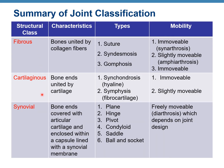Here's the summary of joint classification. Structurally we have fibrous, cartilaginous, and synovial — those are our structural classes. Functionally we have synarthrosis, amphiarthrosis, and diarthrosis — either immovable, slightly movable, or freely movable. We will look at different types during this lecture.